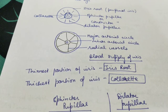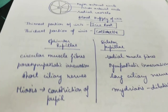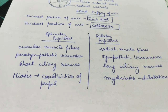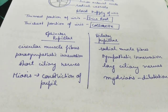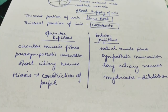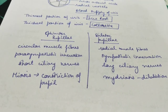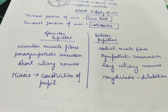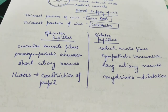The difference between the sphincter pupillae and dilator pupillae: sphincter pupillae have circular muscles and dilator pupillae have radial muscles. Sphincters are supplied by parasympathetic innervation via the short ciliary nerves, whereas dilator pupillae are supplied by sympathetic innervation via the long ciliary nerves. Sphincter pupillae contraction causes pupillary constriction (miosis), and dilator pupillae contraction causes mydriasis, that is dilation of the pupil.